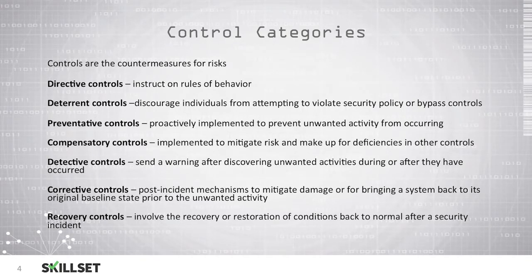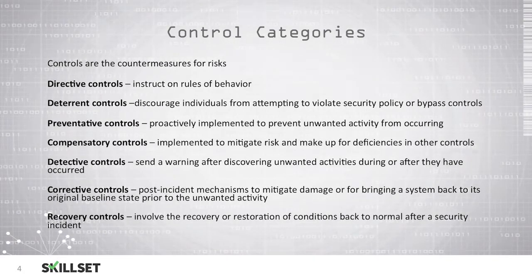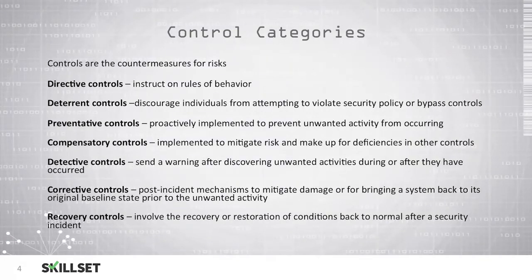Compensatory controls are designed to mitigate risks and make up for any deficiencies in your other controls. An example is job rotation. Job rotation is not going to prevent an employee from taking fraudulent actions; however, by rotating that employee out of their job every six months, their actions will not be permitted to continue indefinitely, and the new individual taking over will hopefully detect that unauthorized activities were occurring.